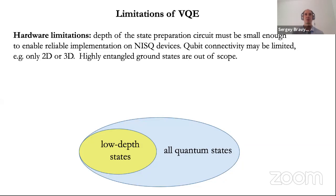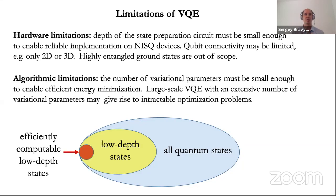Given all this enthusiasm, it's important that we clearly understand the limitations of this method. First, there are hardware limitations: quantum circuits that we can implement reliably on near-term devices are likely to have small depth, and qubit connectivity is likely to be limited — say, only nearest-neighbor gates on a two-dimensional array of qubits. Even with a fault-tolerant universal quantum computer, we might worry about algorithmic limitations. Minimizing variational energy over circuit parameters is a highly non-linear optimization problem, generally considered intractable. For gradient-based optimizers, there can be a barren plateau effect where the gradient of the objective function becomes exponentially small.